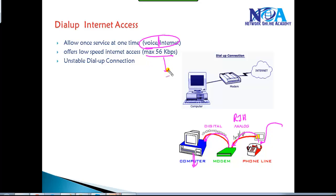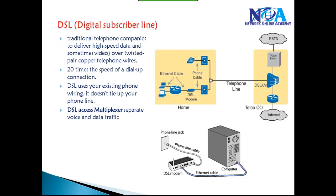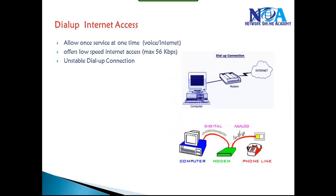Dial-up connections supported only around 56 kbps, which is not very high speed, and they were also unstable and not reliable. In today's networks, we generally don't use these kinds of connections anymore.